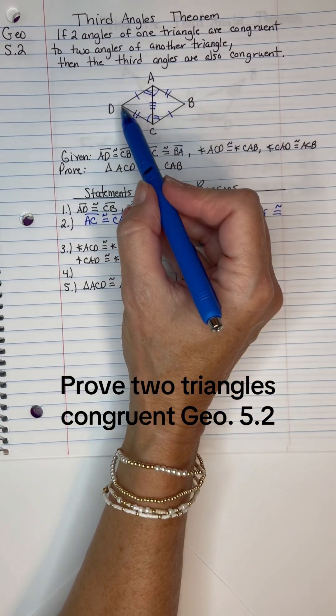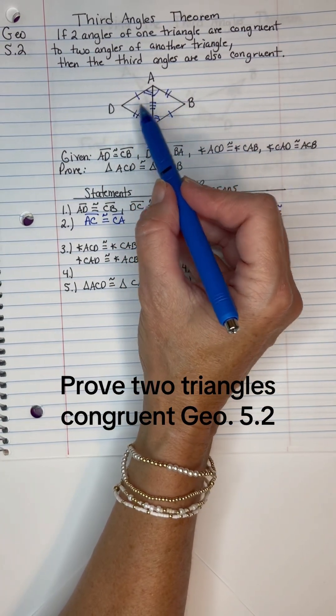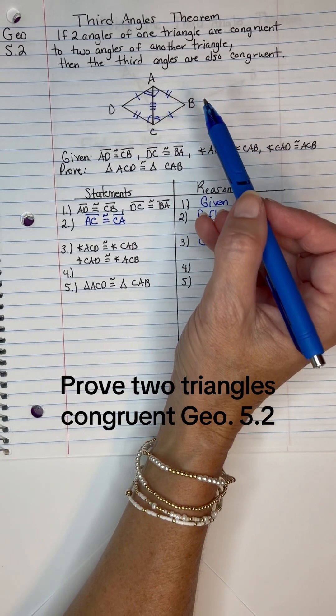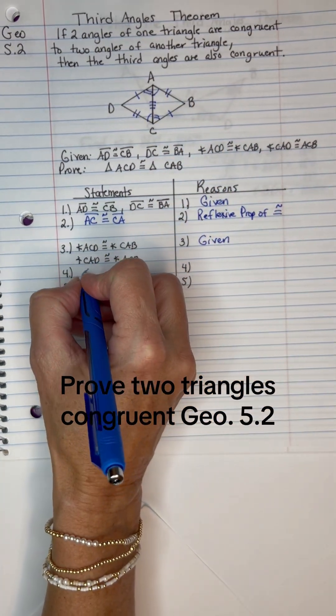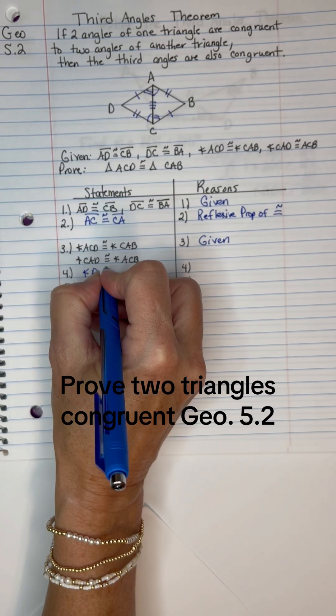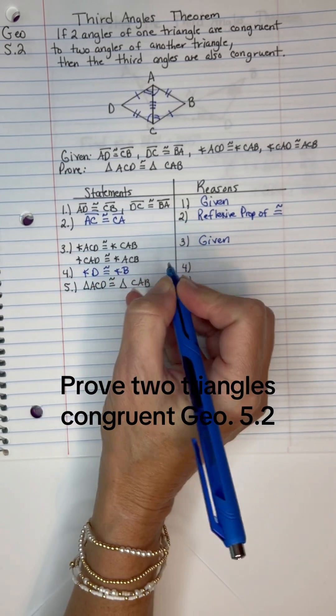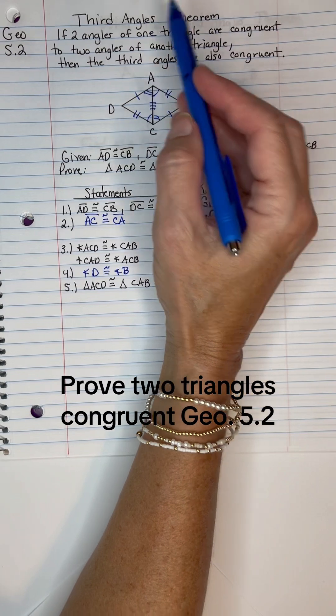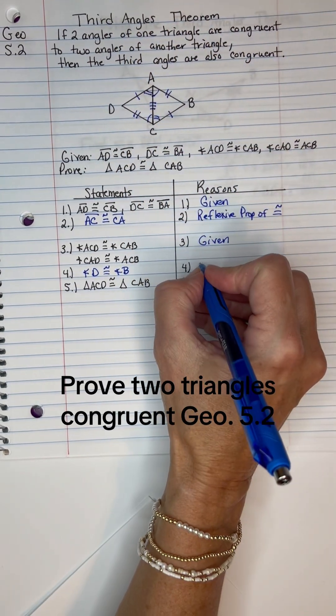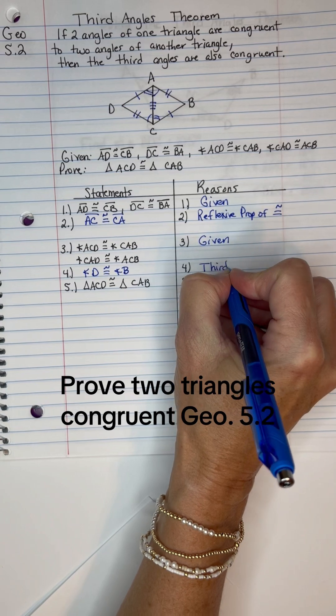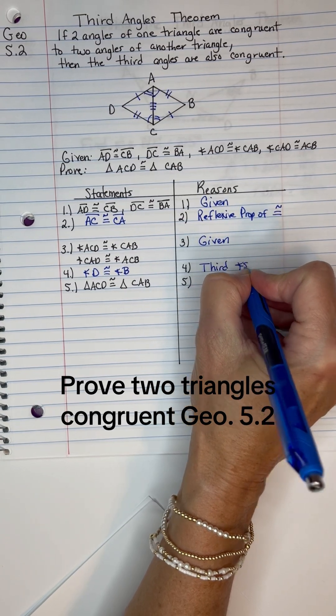And now we need to state, well hey, this D and B, which is the only angles not mentioned, they've got to be congruent to each other. So let's state those. Angle D is congruent to angle B. And the reason we can say that is we've got that third angles theorem.